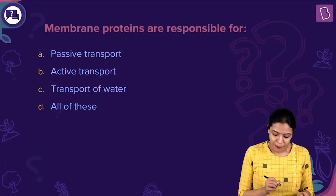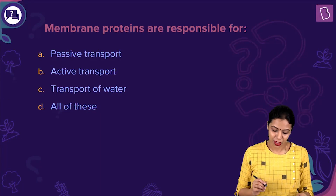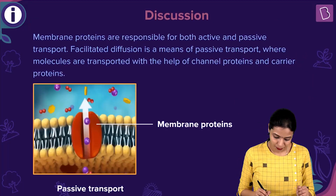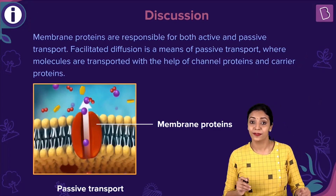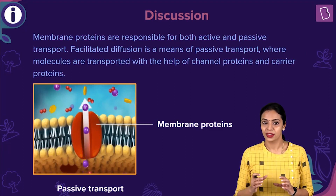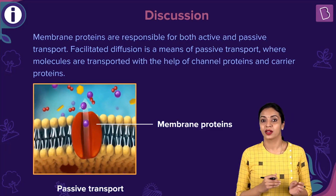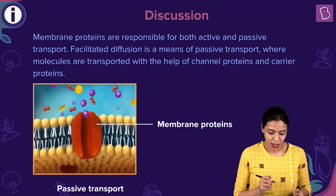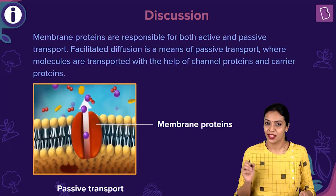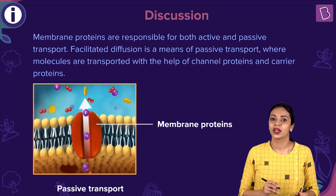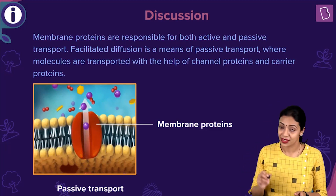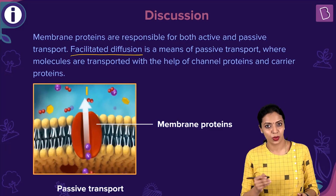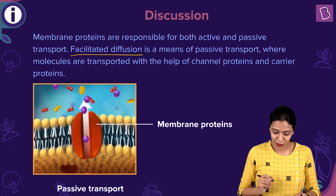Here is the question: membrane proteins are responsible for — options are passive transport, active transport, transport of water, or all of these. Membrane proteins are proteins present within the plasma membrane. Those involved in transport are transmembrane proteins and help transport molecules from one side of the membrane to the other. In both active and passive transport, there is involvement of transport proteins. One example is facilitated diffusion, a type of passive transport where movement of molecules takes place from higher concentration to lower concentration along the concentration gradient with the help of proteins.